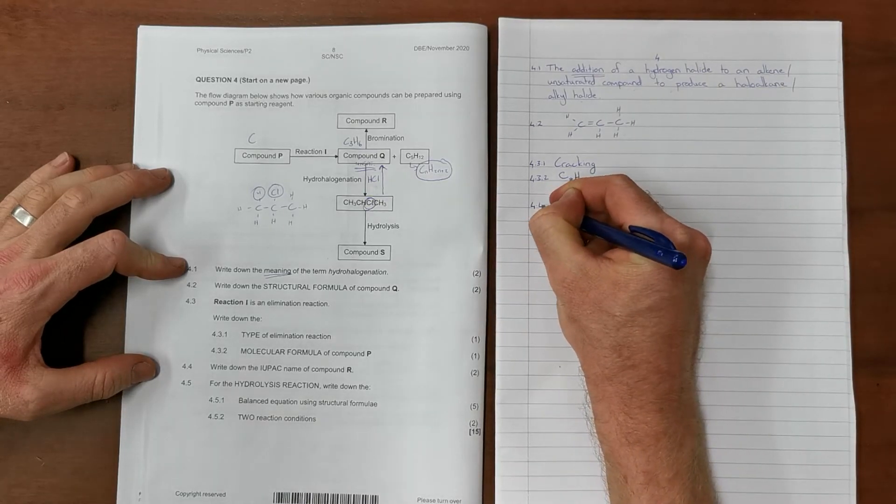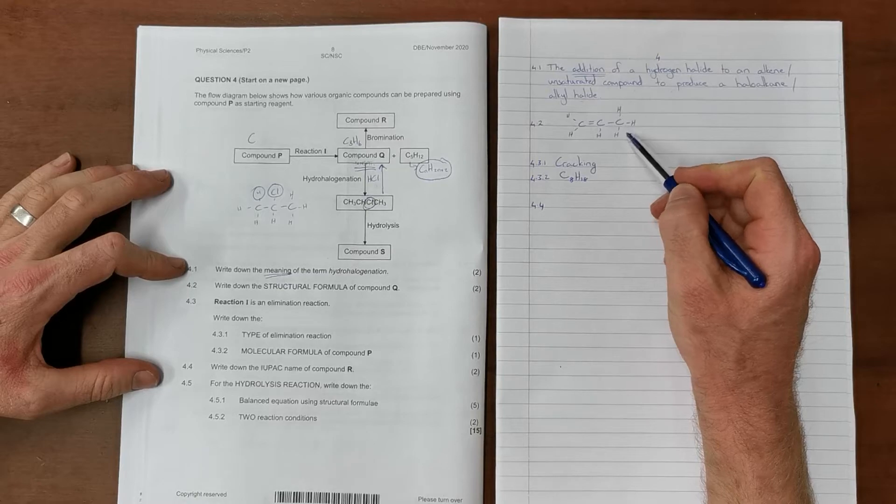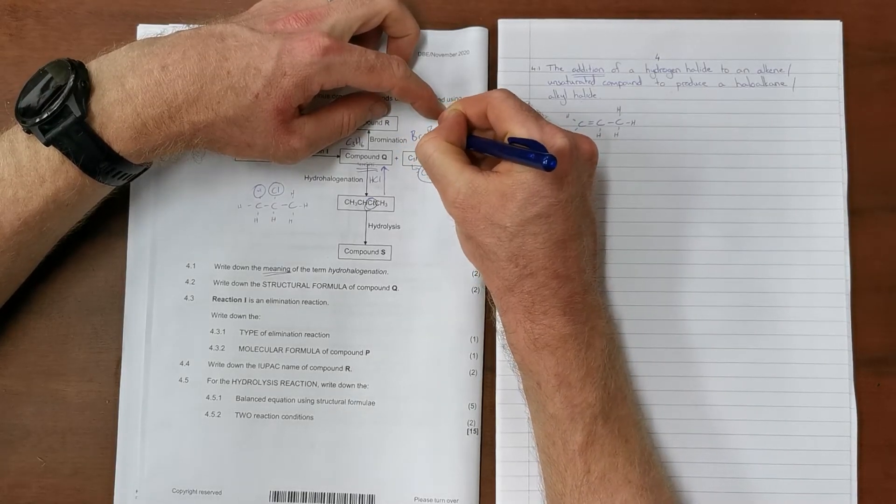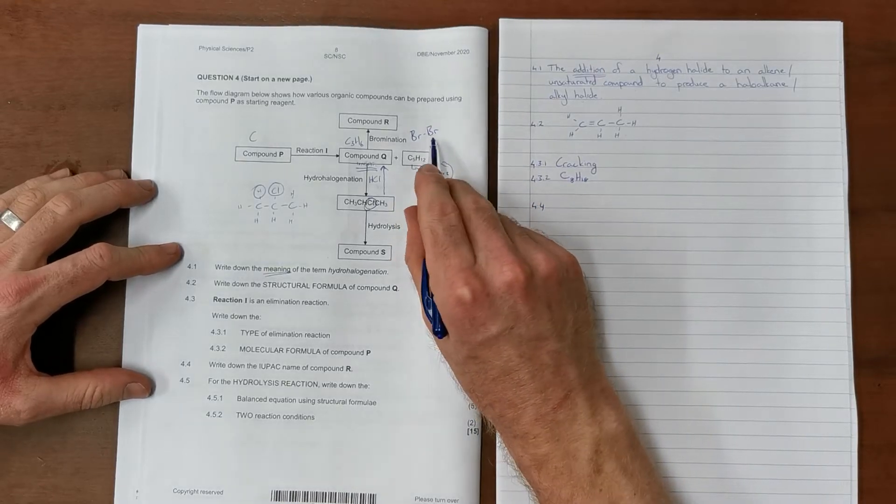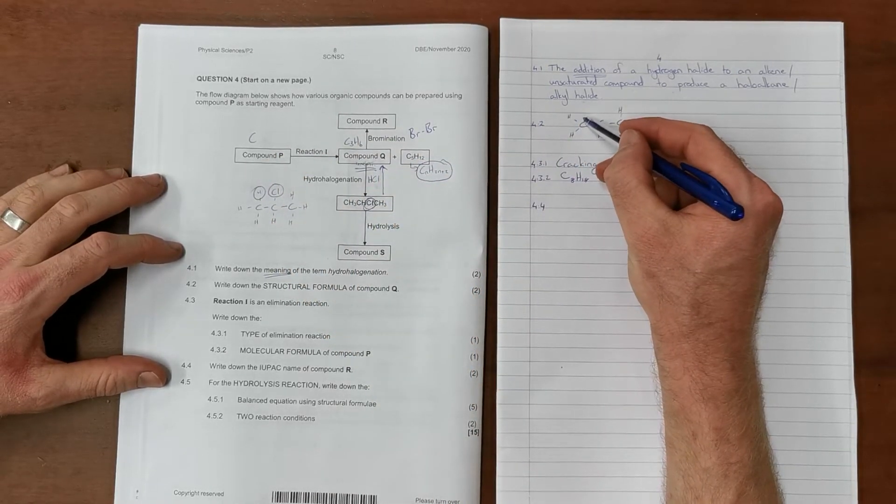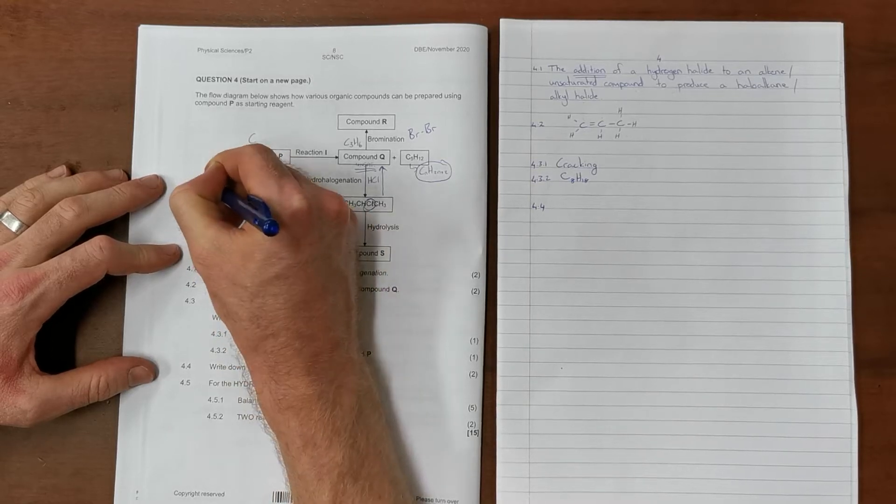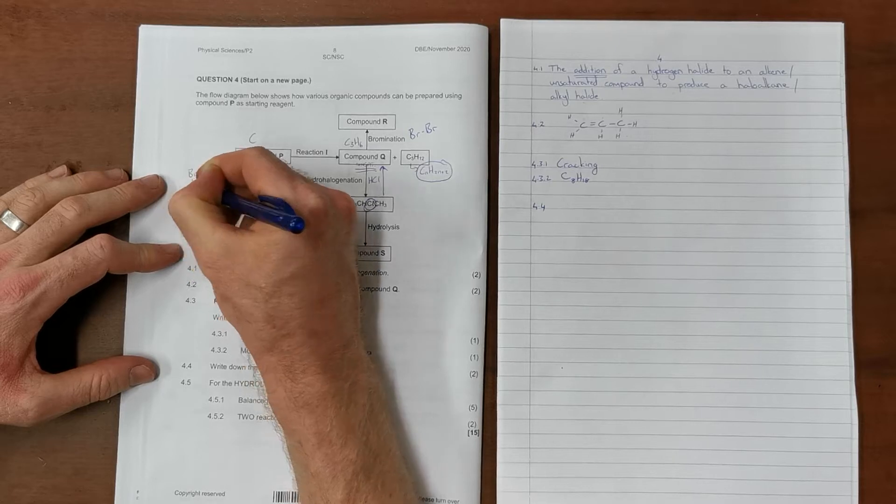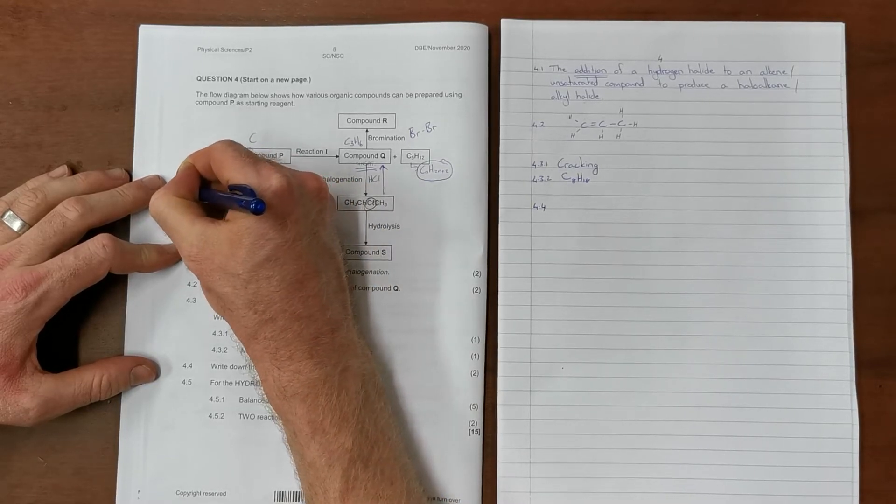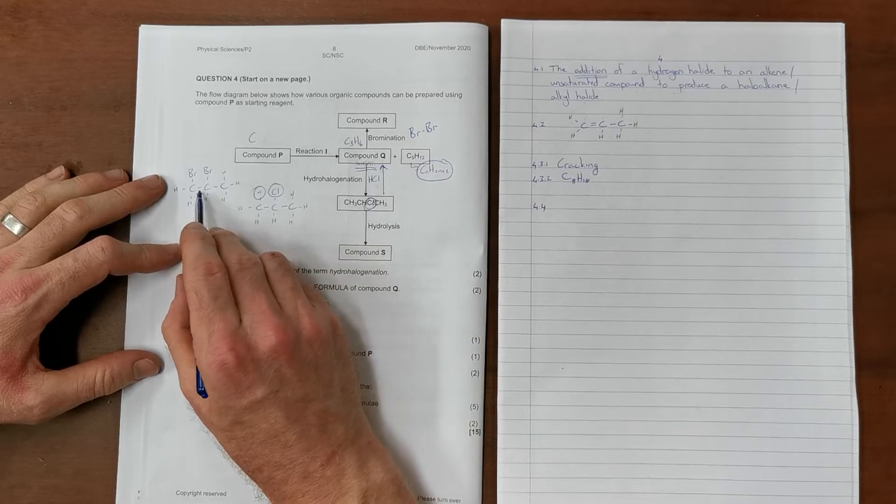Question 4.4 reads: write down the IUPAC name of compound R. Compound R is where we start with our alkene and it undergoes bromination. Bromination, as the name suggests, is the addition of bromine, which we know to be diatomic. When we break the double bond in the alkene, each carbon is now looking to form an additional bond. We form a compound that only contains single bonds, with hydrogens where there are not bromine molecules, and both bromine molecules have attached to the sites where the double bond was broken.